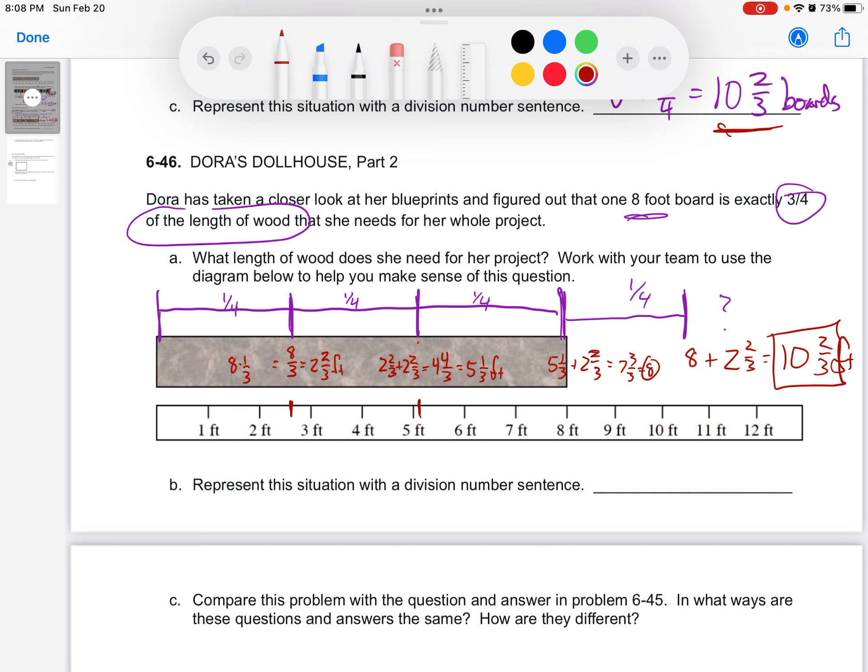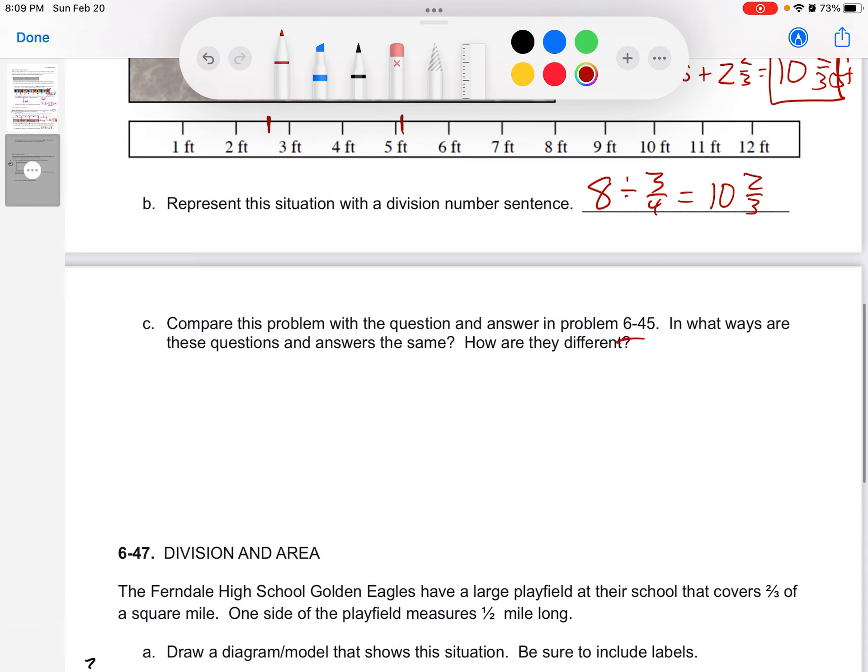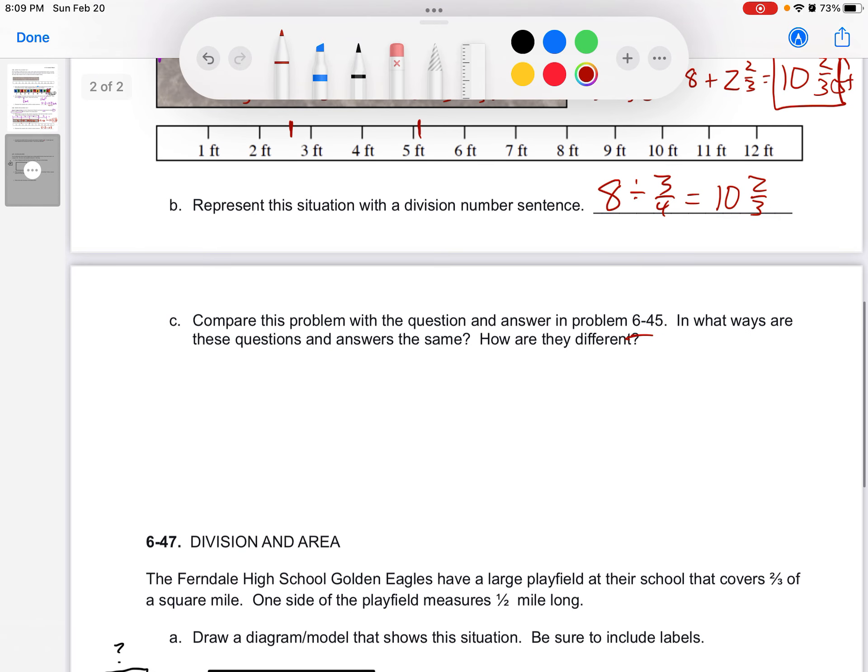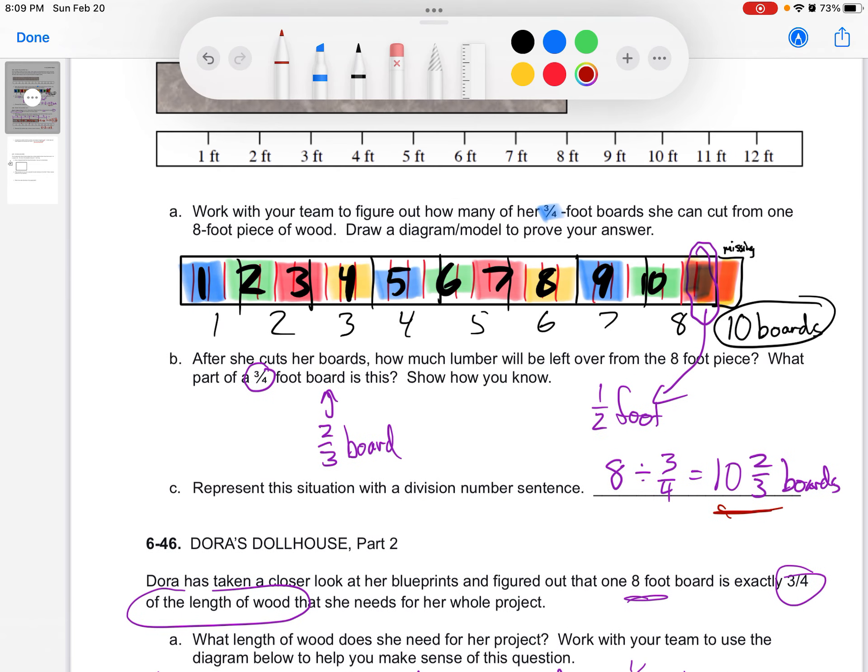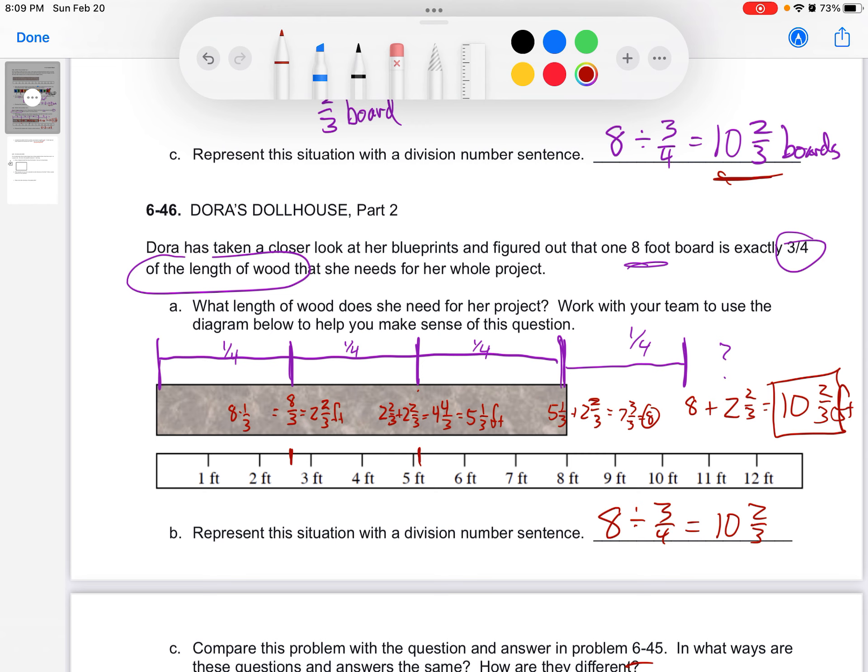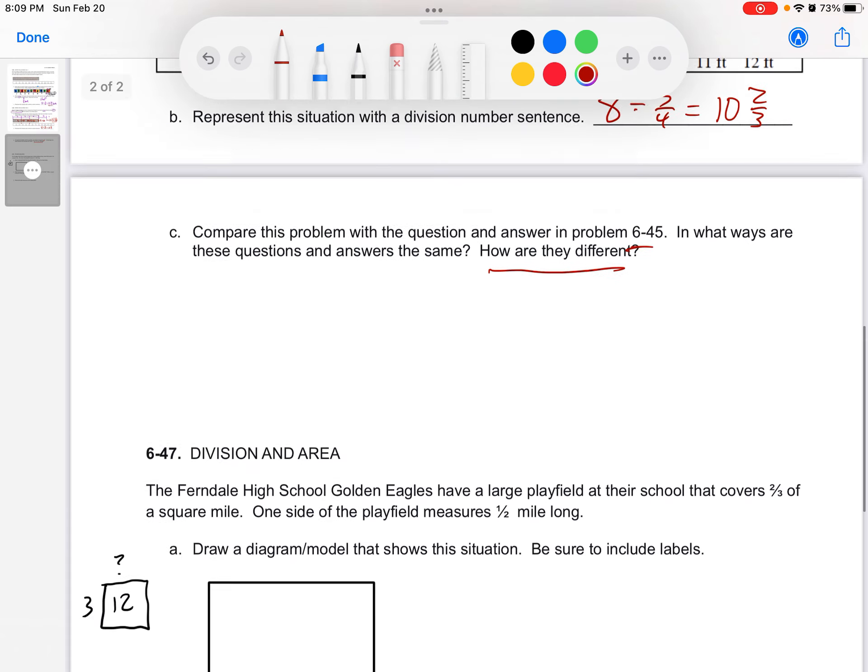So, represent the situation with a division number sentence. Well, we have eight, and it's three-fourths of what we need. And what does that turn out to be? Ten-and-two-thirds, in this case, feet. Compare it up above. Well, we just did our comparison, didn't we? In what ways are these questions and answers the same? Well, they're still eight divided by three-fourths, and we still get the same answer. How are they different? Well, it's different. Are we breaking it into pieces, or are we looking at the whole thing as just part of it? Here, we took the eight and divided it into three-quarter-foot pieces. Here, eight was three-quarters of the whole thing. So, it depends on where that three-quarters, what that three-quarters represents.